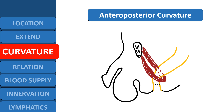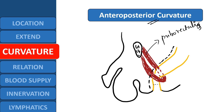Coming to the curvatures, there are two types: anteroposterior curvature and lateral curvatures. The puborectalis muscle, which is a sling of muscle, pulls the rectum forward close to the pubis, causing the change in direction. This produces two anteroposterior curvatures: the sacral curvature and the pubic curvature.